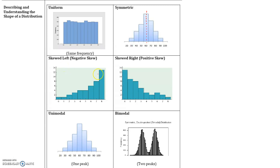This distribution is called skewed left. Skewed left means that a majority of the values actually fall to the right — this is called a left tail. If you think of this as an animal, its tail is to the left, so this is skewed left. This one is skewed right, so its tail is to the right, which means a majority of the values actually fall to the left. When you have a skew, the majority of the values fall to the opposite side.